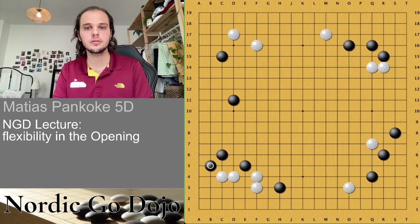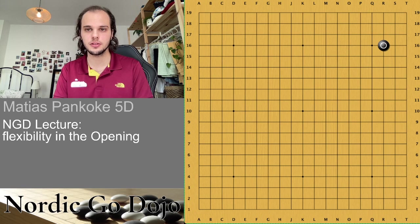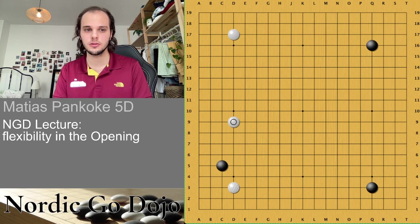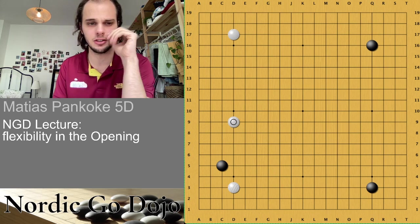Some comments — someone saw something similar in a lecture, that's nice. Let's get to some different examples. This is a game I played against Anti. He even went for the three-space extension or pincer, and even then I didn't want to play this, because I had the feeling I would end up in a slightly uncomfortable result I don't really like.